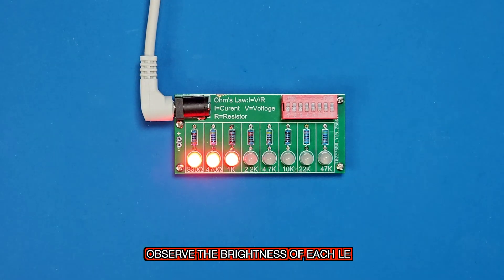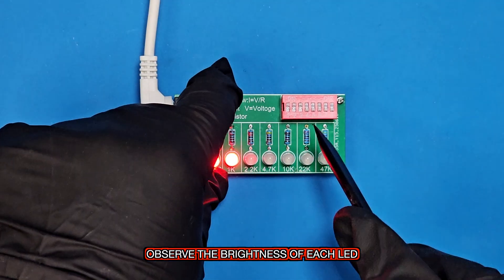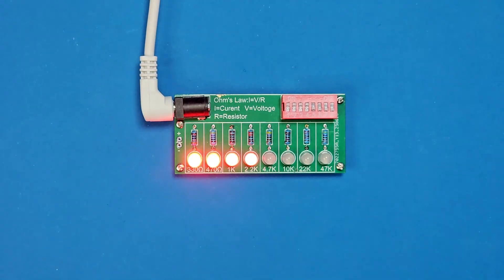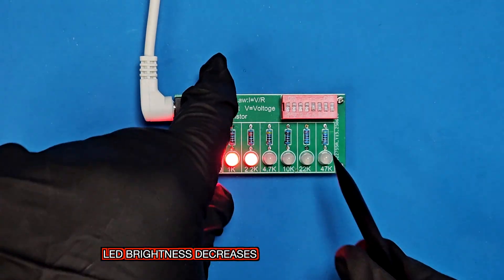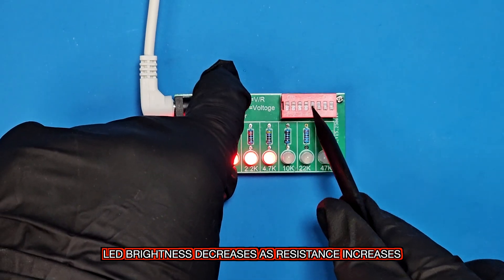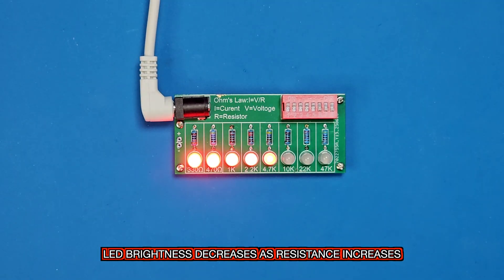Now, observe the brightness of each LED. The LED brightness decreases as the resistance increases.